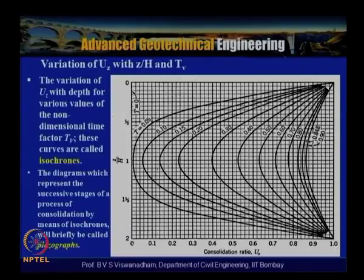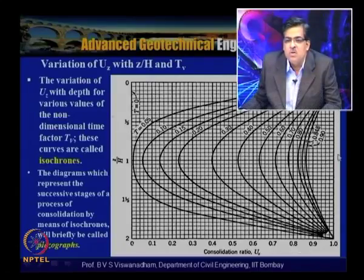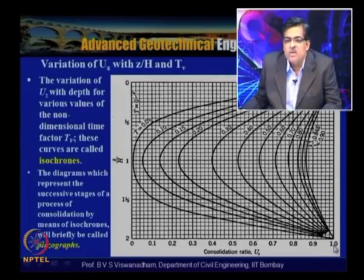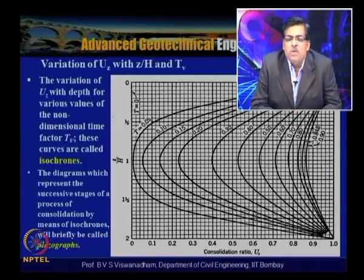The solution gives a system of curves showing the variation of Uz with z/h for various values of the non-dimensional time factor Tv. These curves are called isochrones, and the diagram representing the successive stages of the consolidation process by means of isochrones is called a piezograph.